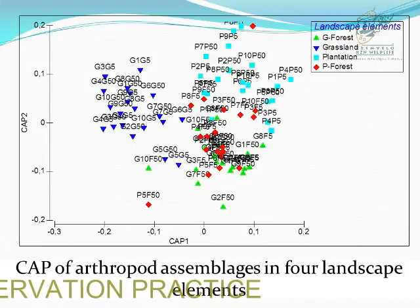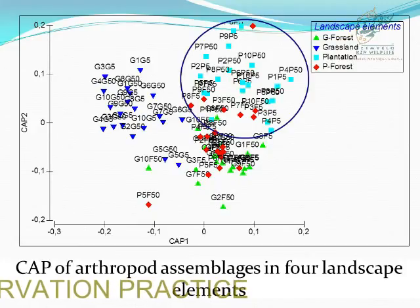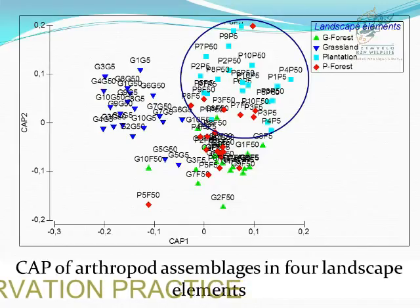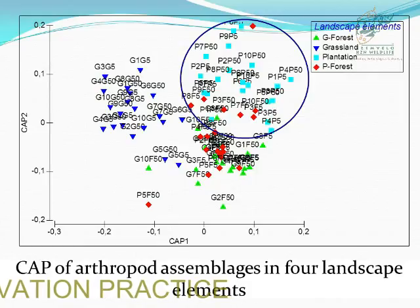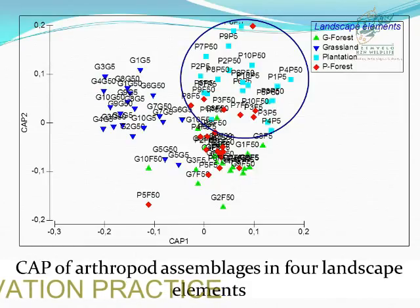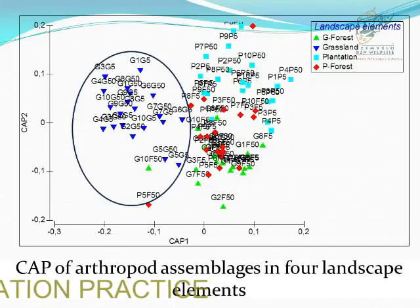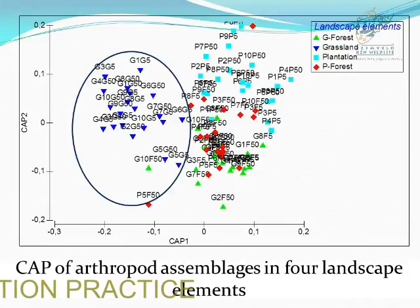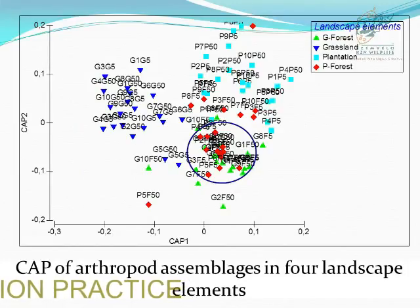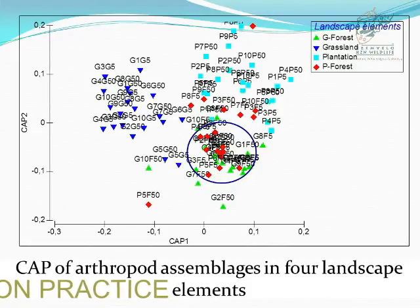We also performed a canonical analysis of principal coordinates (CAP), which produced results similar to PERMANOVA. The light-colored cluster represents pine plantation and the red cluster represents natural forest adjacent to pine plantation. We found a very soft edge between these two landscape elements, with generalist species moving from pine plantation into the natural forest. In contrast, with grassland and natural forest adjacent to grassland, we found a very hard, clear edge. The natural forest interiors — both adjacent to grassland and adjacent to pine plantation — were clustered together, meaning natural forest interiors are similar regardless of the matrix type.